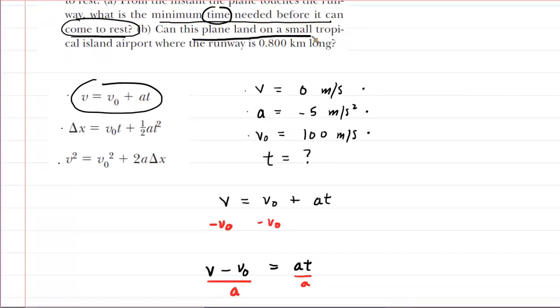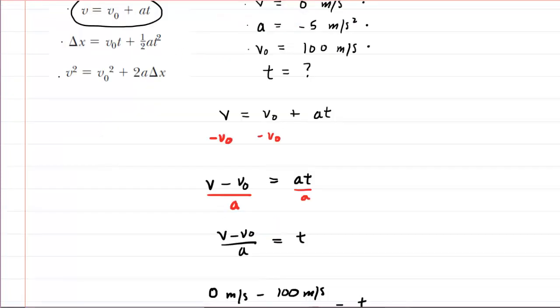They ask, can this plane land on a small tropical island airport where the runway is 0.8 kilometers long? So if the runway is 0.8 kilometers, this will mean that our displacement, as the airplane comes to a rest, is 0.8 kilometers. But of course, we need to convert that into a standard unit of meters. So we'll do a little conversion here.